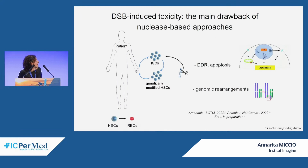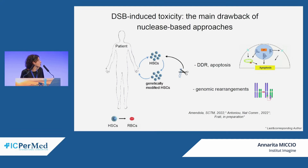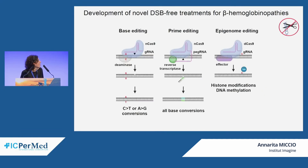However, all nuclease-based strategies have a major drawback: they generate DNA double-strand breaks in the genome that can induce a DNA damage response leading to apoptosis. In addition, it has been recently shown that the CRISPR-Cas9 nuclease system can generate larger genomic rearrangements such as large deletions, translocations, or even chromosome loss. Therefore, the general idea in the field is to develop double-strand break-free strategies.